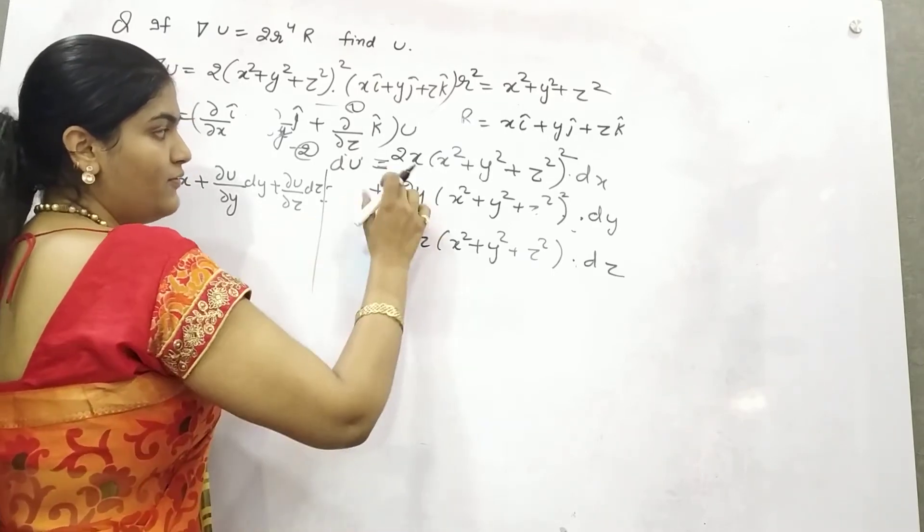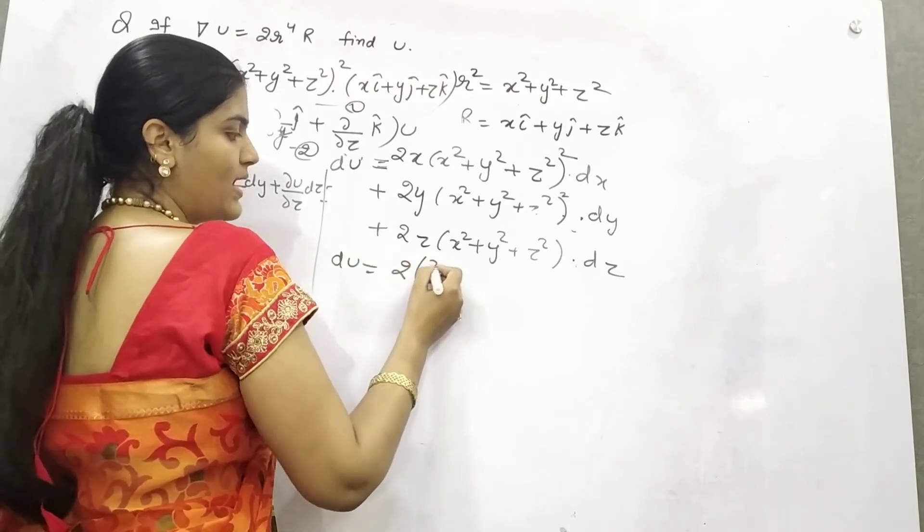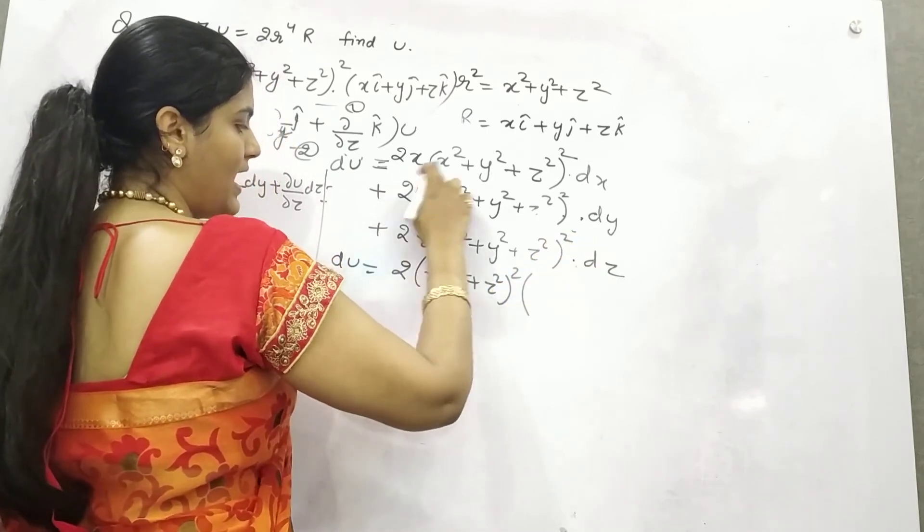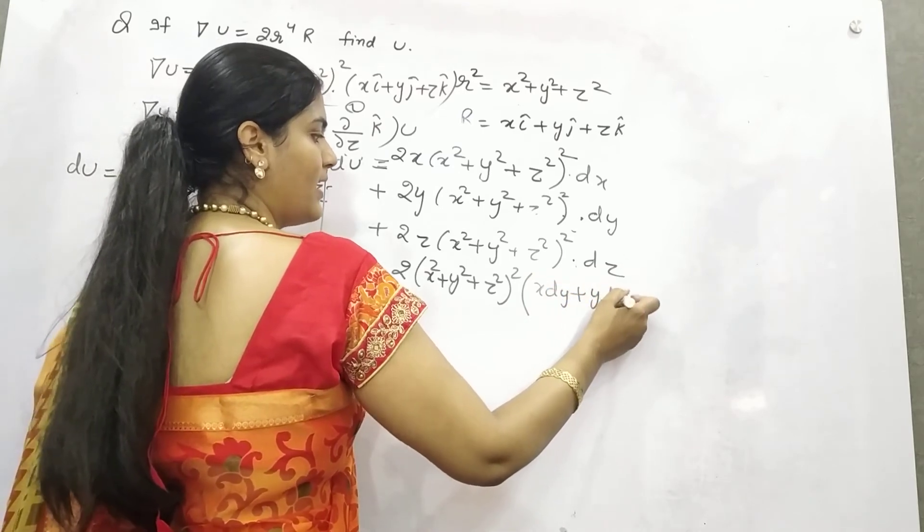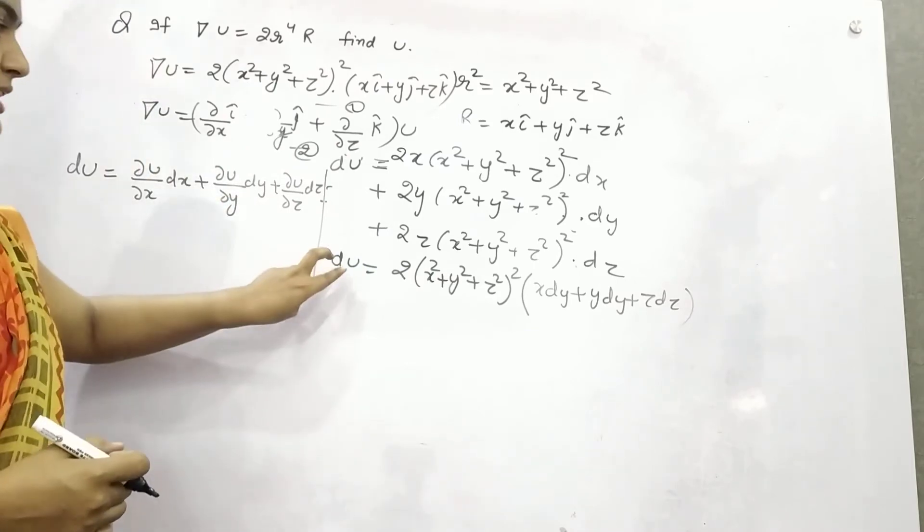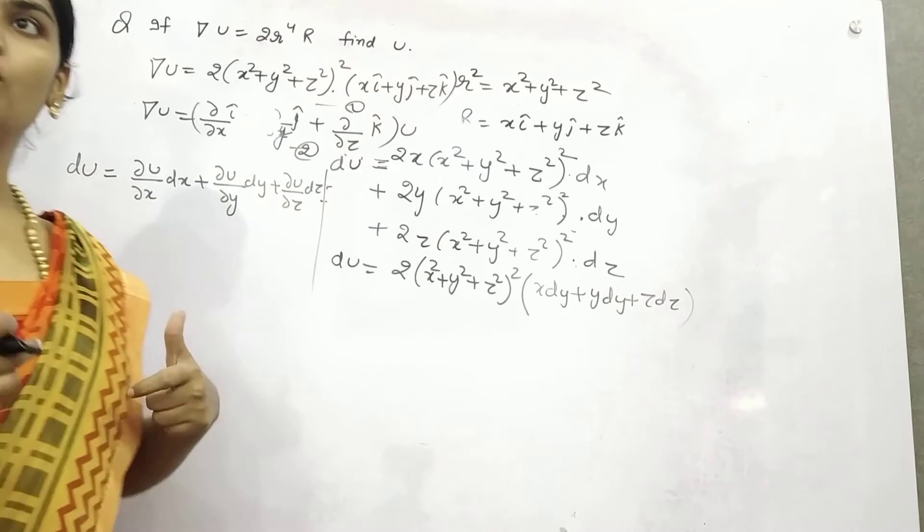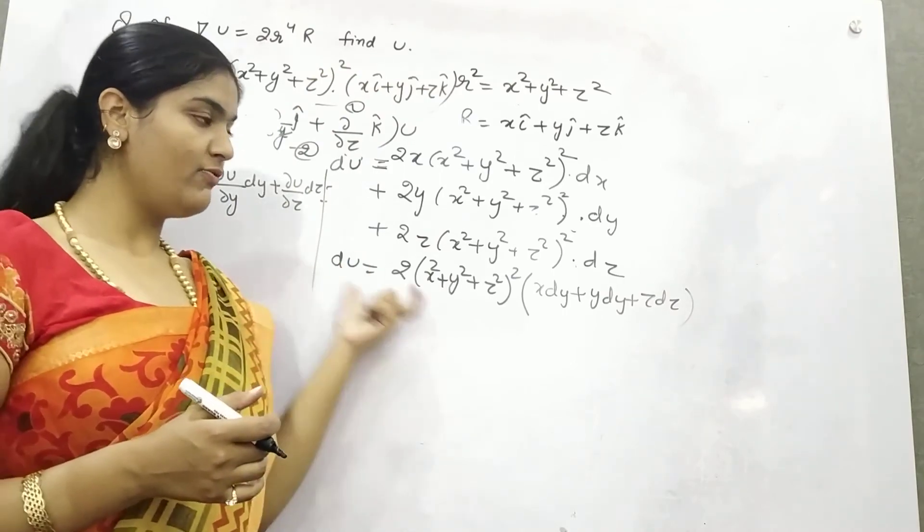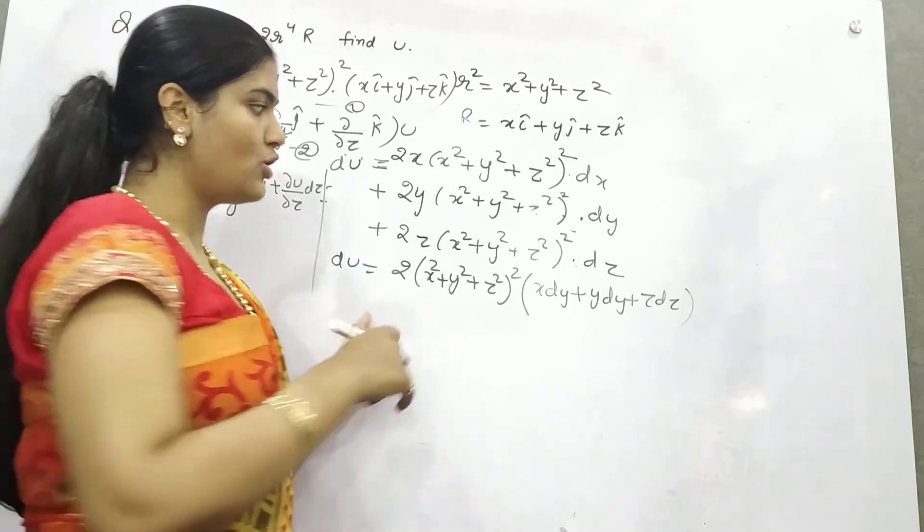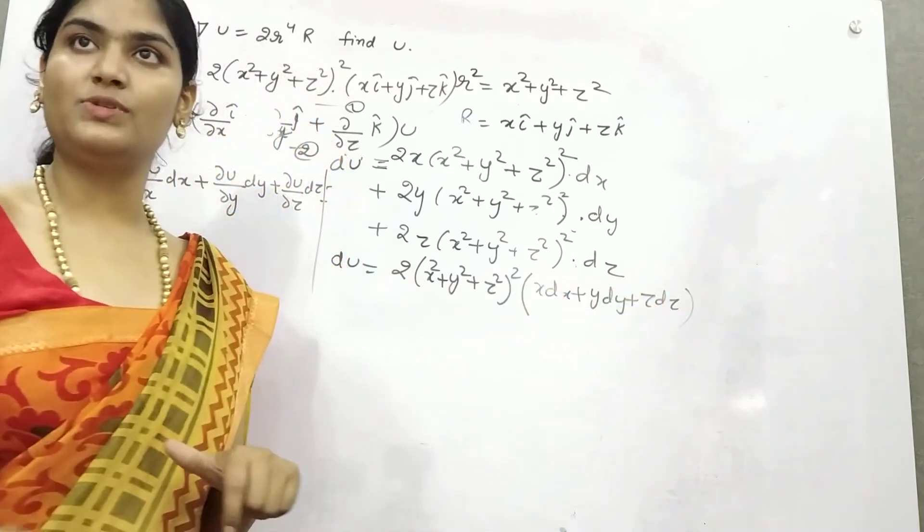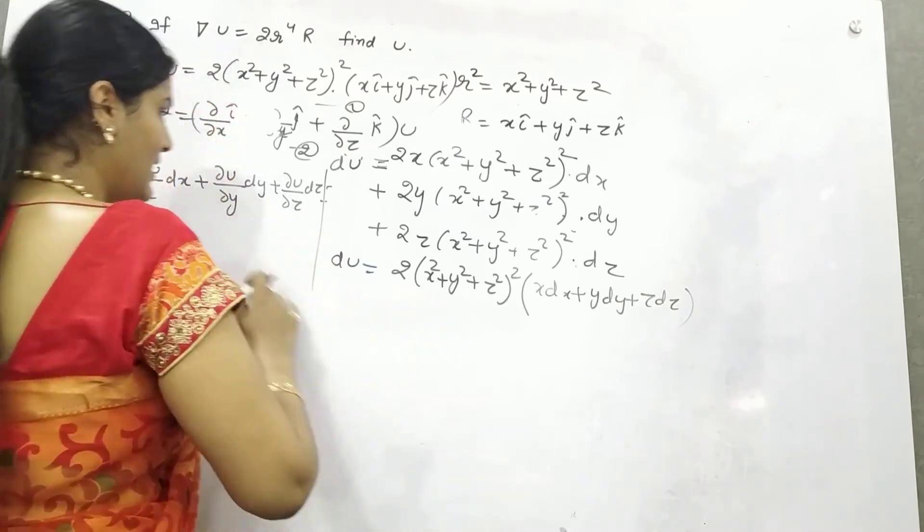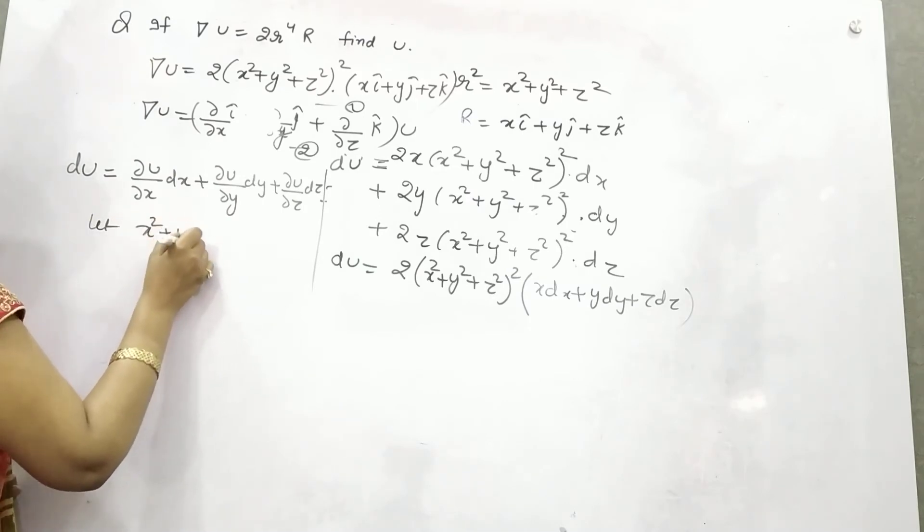What you can do: if you see, you can take as common 2(x² + y² + z²)², and what is left? x·dx + y·dy + z·dz. This is your du. Now you know that from du you want the variable. What you can do? Integrate. But for integration, before applying integration, make it uniform - change it thoroughly into dx or dy or dz in one variable.